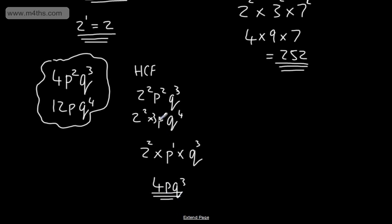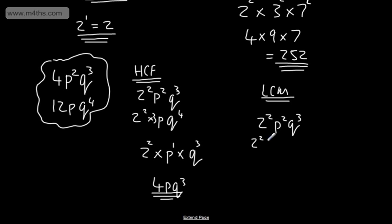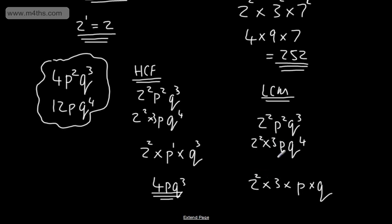For the lowest common multiple of 4p²q³ and 12pq⁴, we take our lists: 2² × p² × q³ and 2² × 3 × p × q⁴. We need each term to appear in the list and take it to its highest power. So we have 2, 3, p, and q. That's 2 squared, 3 to the power of 1, p squared, and q to the power of 4. So that gives us 12p²q⁴. And that is the lowest common multiple.